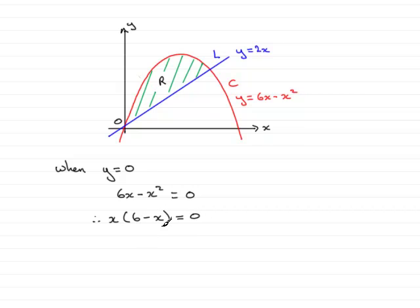So either factor could equal 0, so therefore x equals 0 or 6 minus x equals 0. And that leads to x equals 0, same answer here, or by adding x to both sides gives 6 equals x, or simply x equals 6. So the curve then intersects the x-axis at x equals 0 or x equals 6.